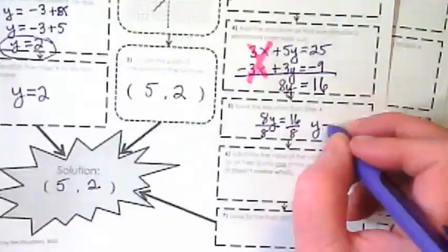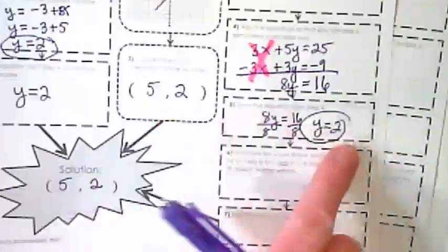16 divided by 8 is 2, so our y is equal to 2, which we already knew because we've already solved this twice already, right? This matches here.